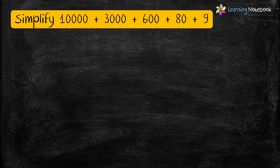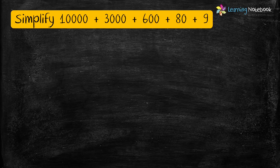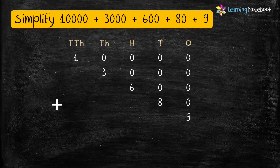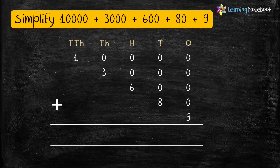Now let's see how to form a number if the expanded form is given to us. Example: simplify 10,000 plus 3,000 plus 600 plus 80 plus 9. We can find this number by writing the expanded form in column form and then adding these numbers.